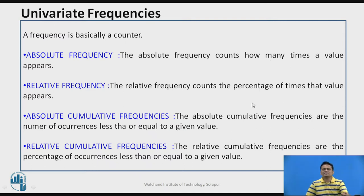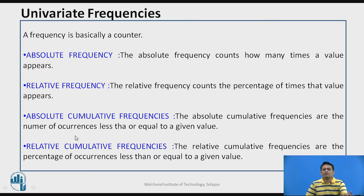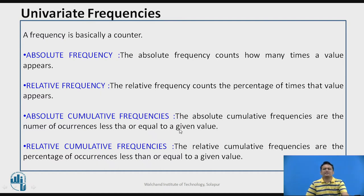When considering frequency values in a cumulative way, you get two more frequency descriptors. Absolute cumulative frequency is the cumulative count of occurrences for all values up to and including a particular value. Relative cumulative frequency is the cumulative sum of the percentage or relative frequency values. This will be better understood with an example.